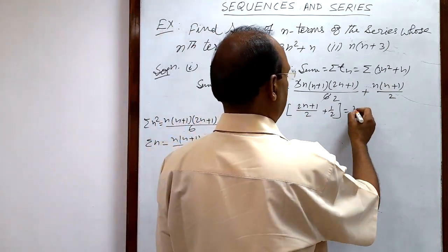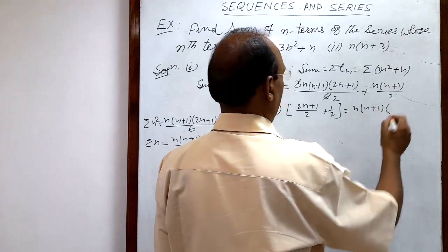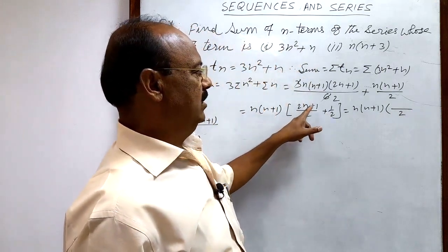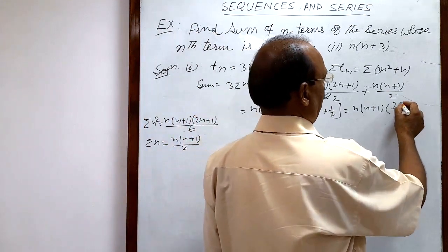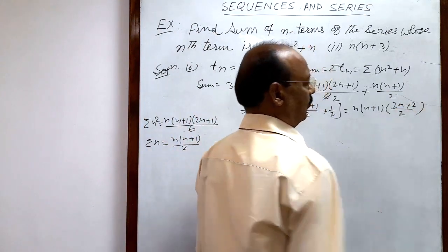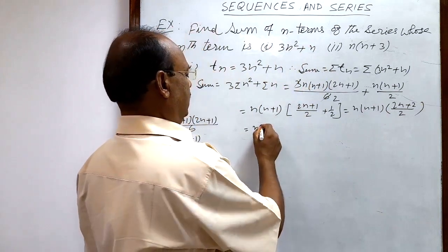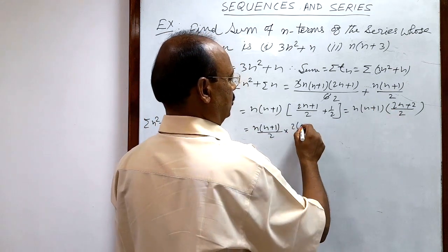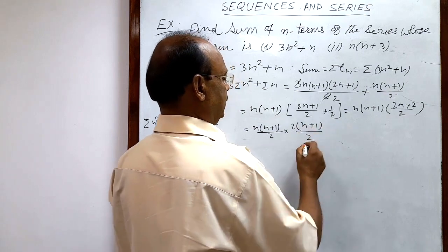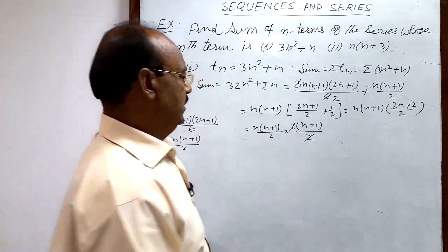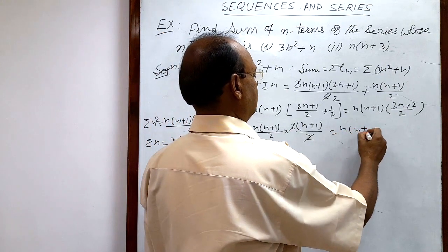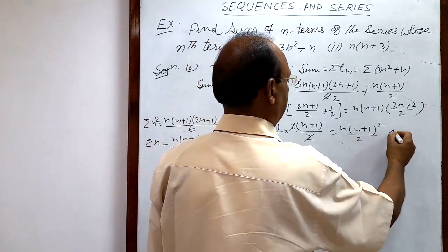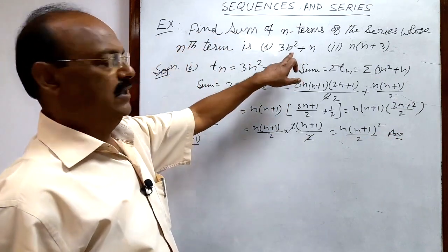Taking n(n+1) as common, the remaining parts are (2n+1)/2 and 1/2. Taking LCM of 2, the numerator becomes (2n+1) + 1 = 2n+2. Factoring out 2 from 2n+2 gives 2(n+1), which cancels with the denominator 2. The final answer is n(n+1)²/2.